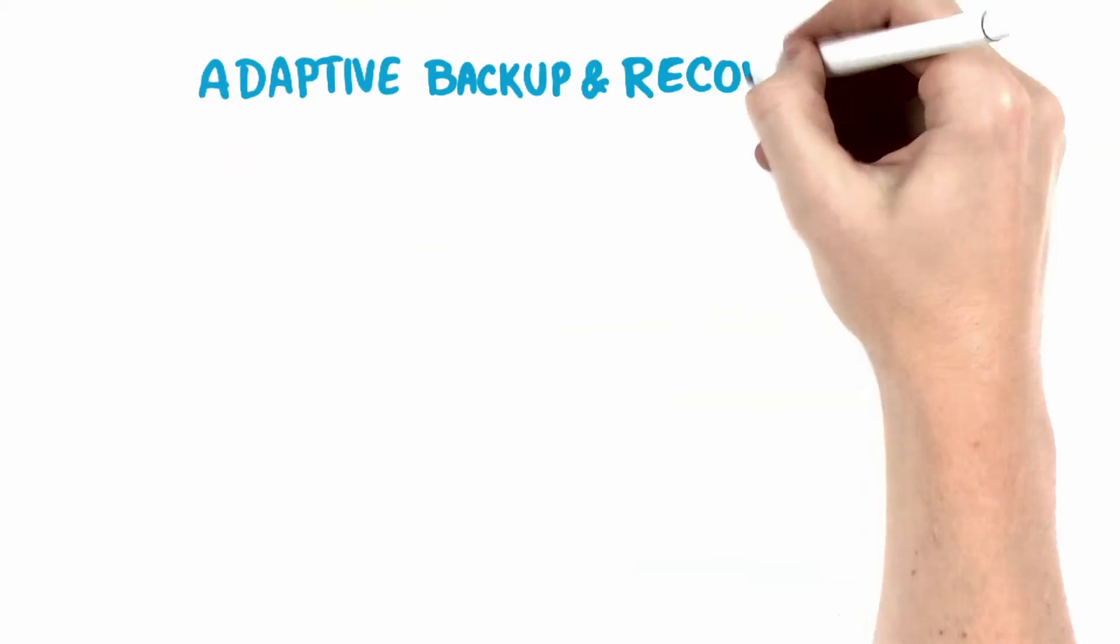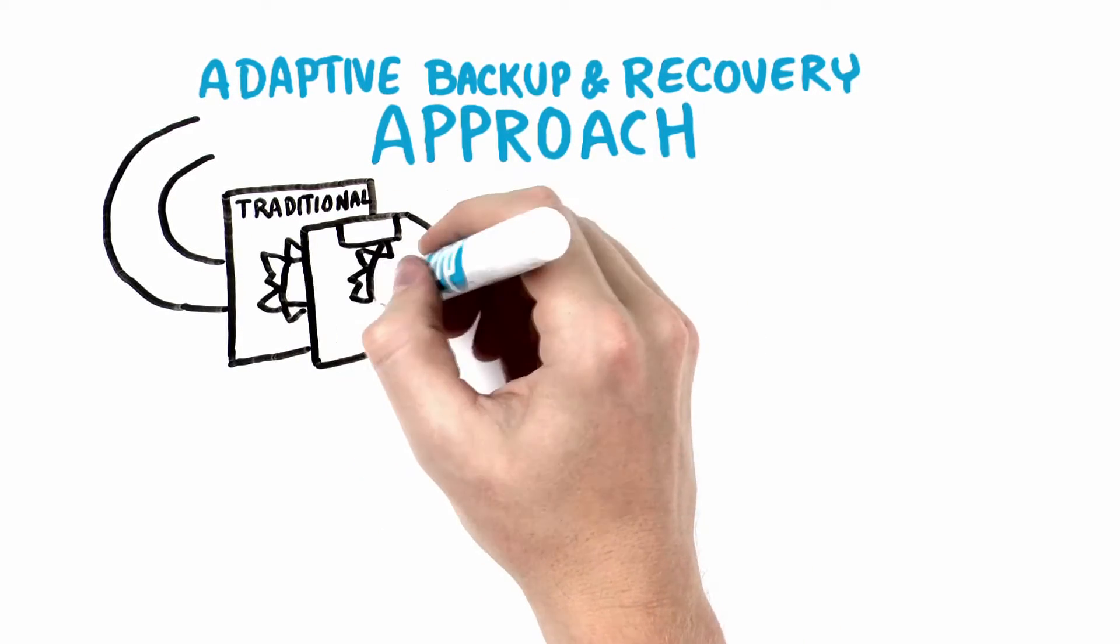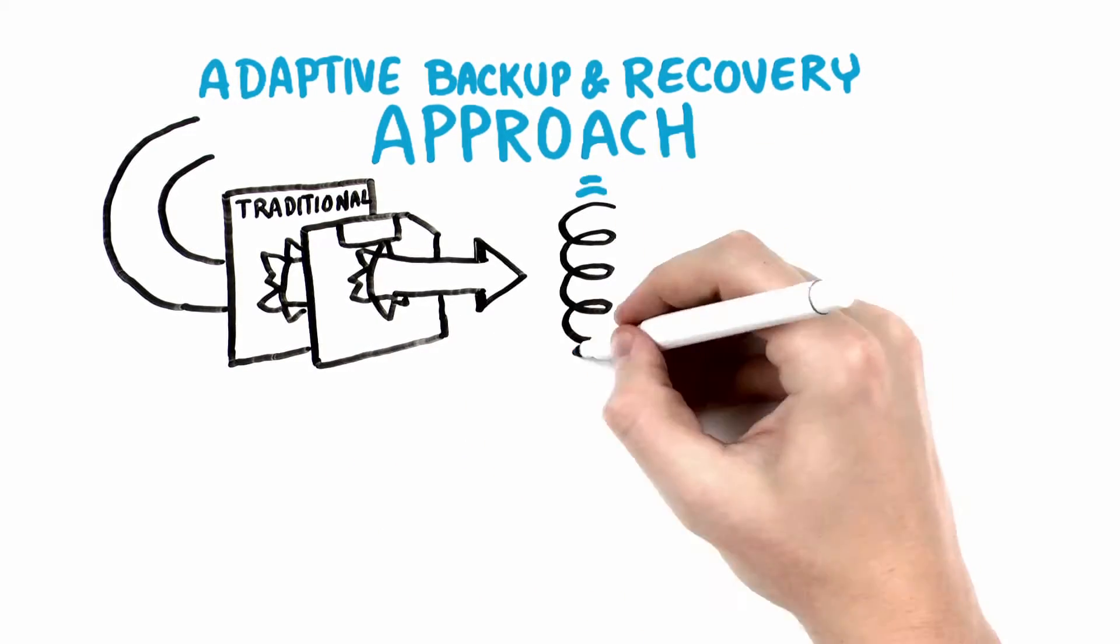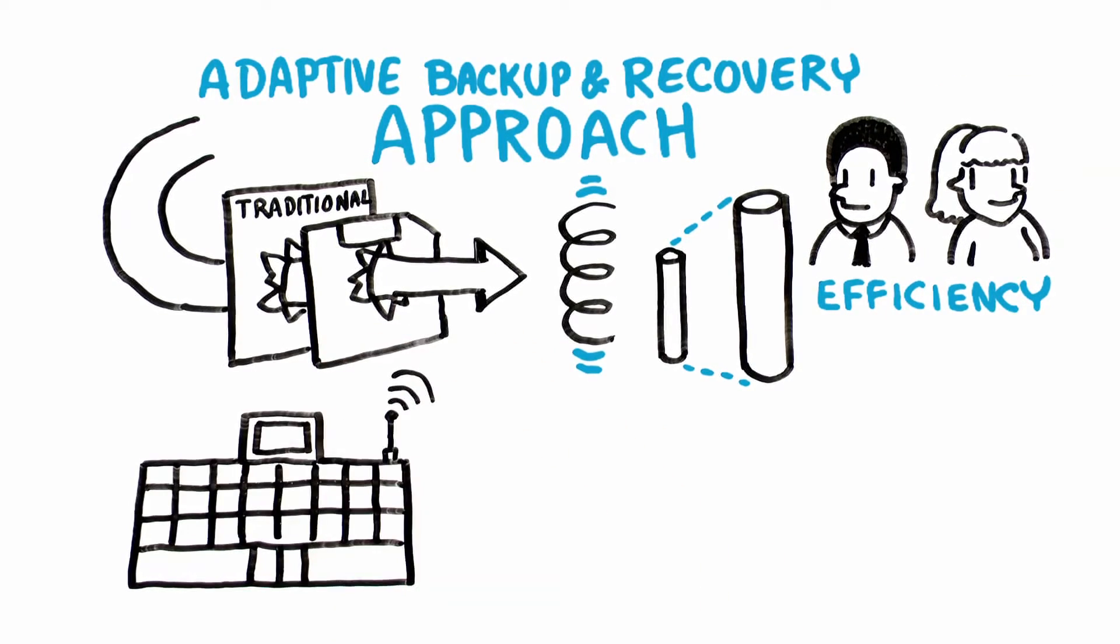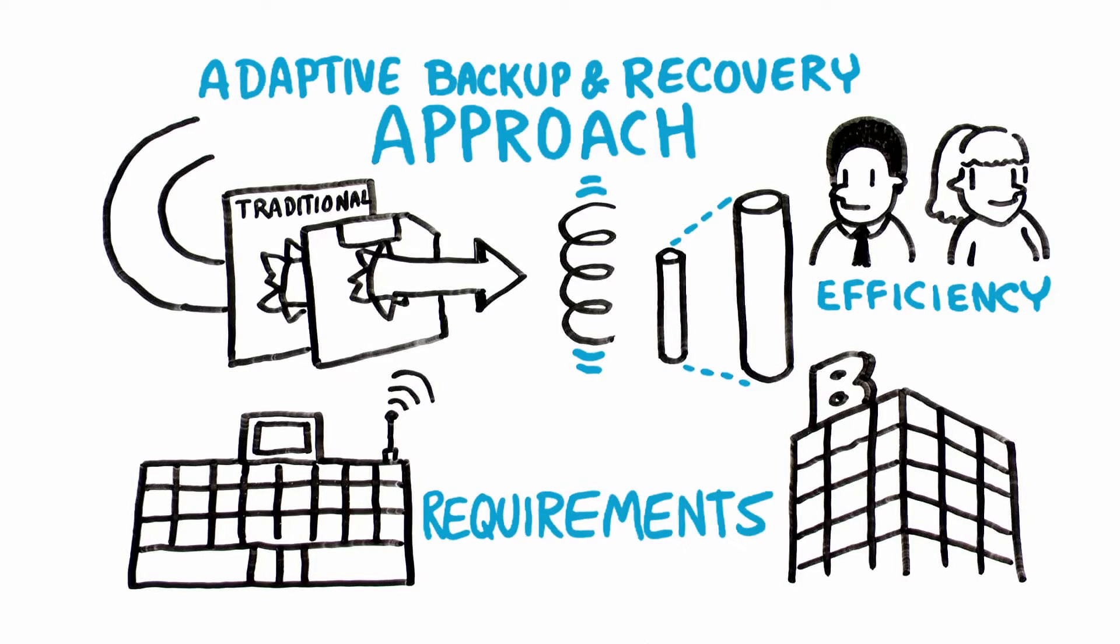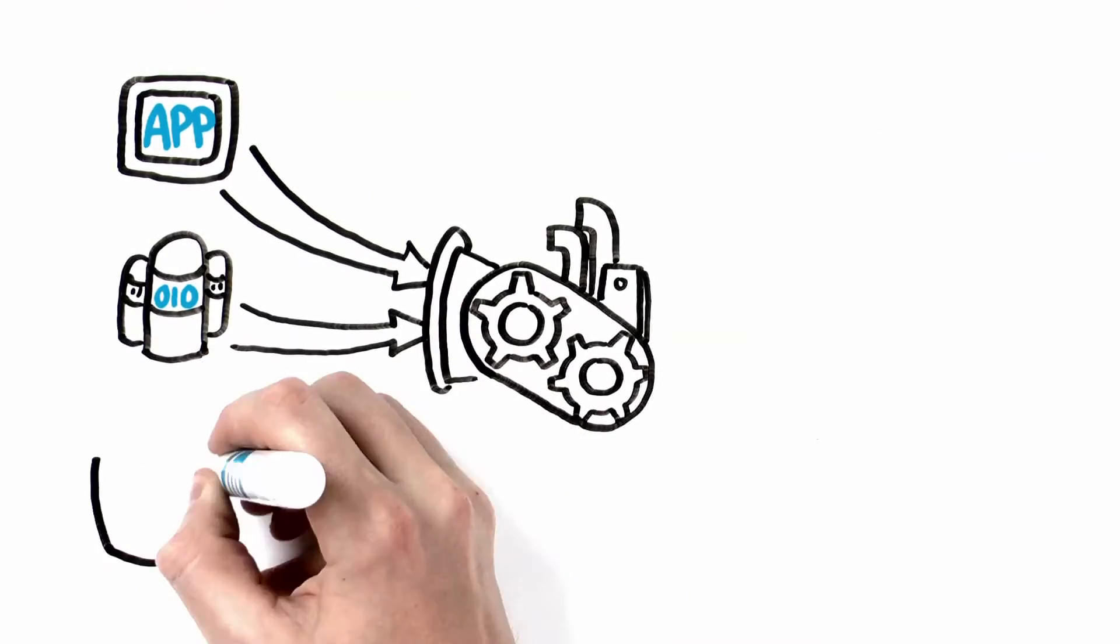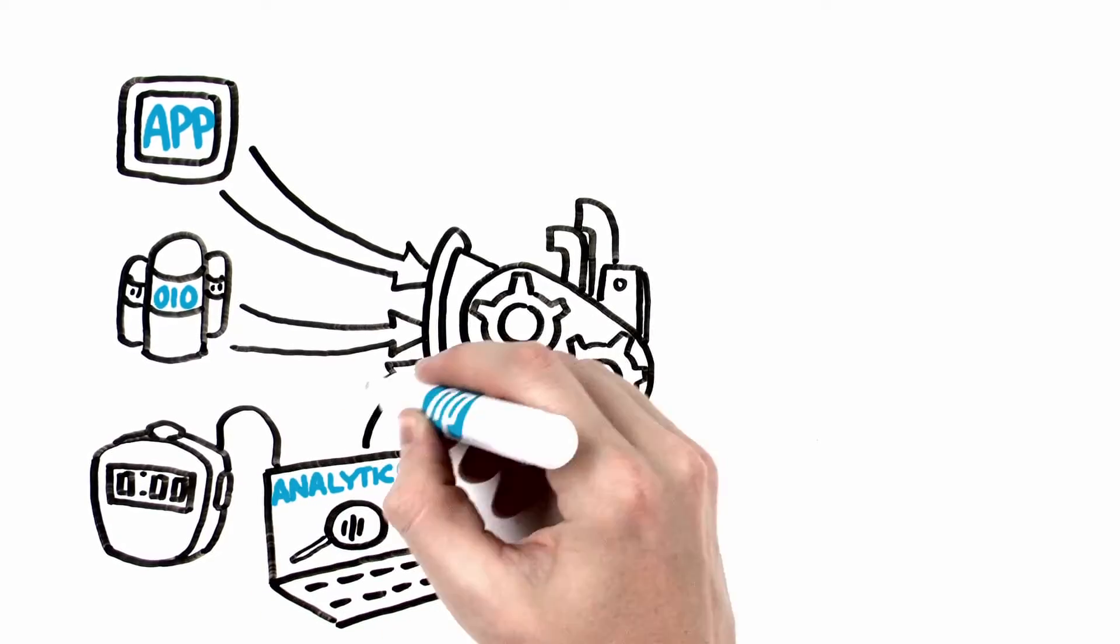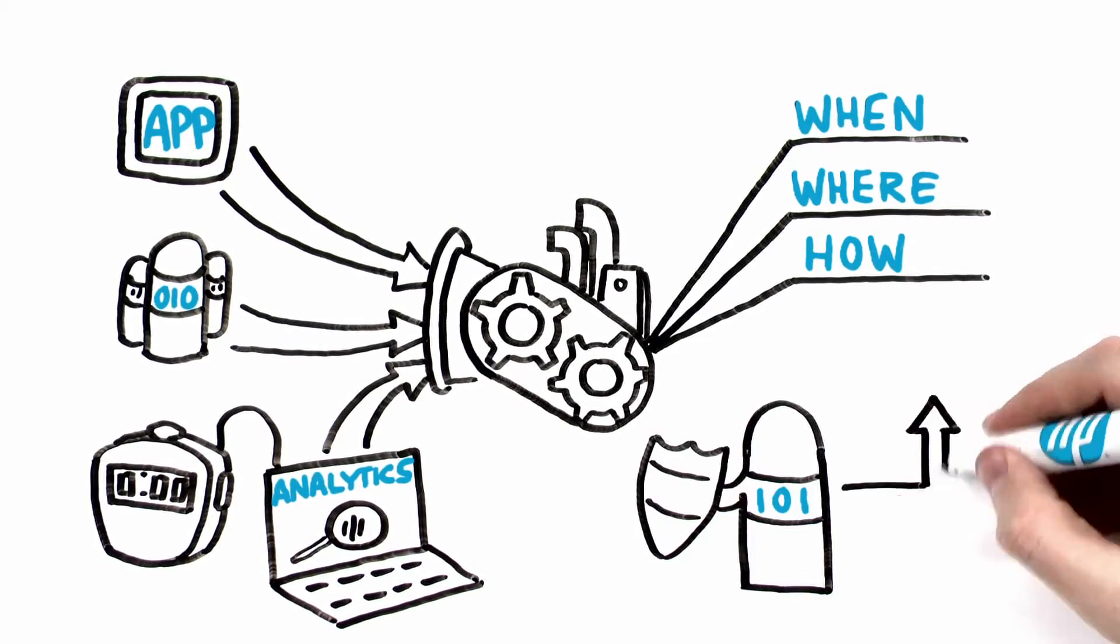The Adaptive Backup and Recovery approach goes beyond traditional backup and recovery requirements to deliver business resiliency, scale, and resource efficiency, critical to meet today's dynamic data center and business requirements. It leverages application and data intimacy and real-time operational analytics to decide when, where, and how data should be protected and be available.